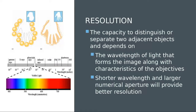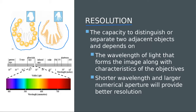The second characteristic of the microscope is resolution — the ability to show detail of an enlarged object. Good resolution means the object looks very clear. Bad resolution means the object appears blurry. A higher resolution microscope gives a clearer image.